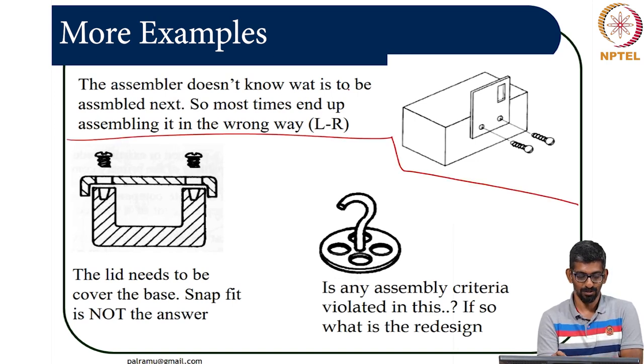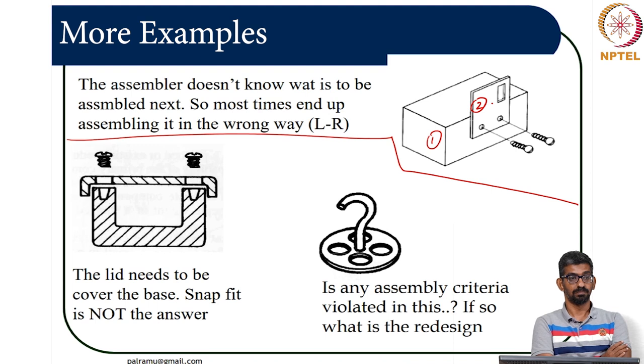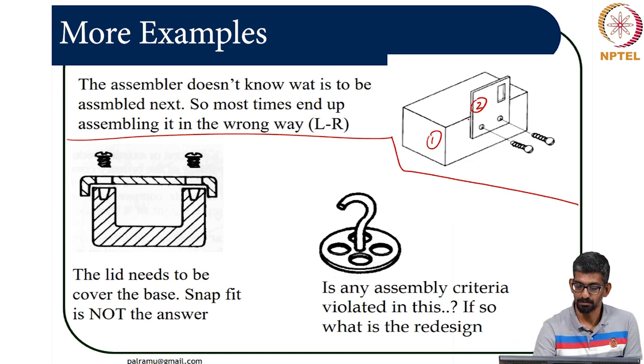This is usually in wood or plastic you can do this. But let me ask you - the assembler does not know what is to be assembled next. Most times I end up assembling it in the wrong way, left to right. You understand what I am saying? This is part 1, this is part 2, but the way it is currently this has to be in the left side rather than right side, but there is no guarantee I can always flip it and do it. How can you guarantee that?